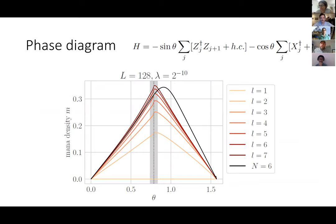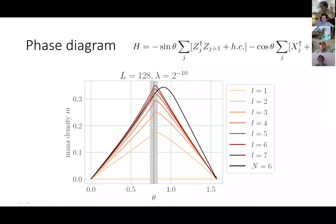We take that chain, do a matrix product state calculation to get the ground state as an MPS for a 128-site chain, for different values of theta. We look at sub-regions of size L — L equals one, two, three, up to seven — calculate the mana, and divide by the sub-region size to get the mana density as a function of theta. The first thing we find is that the mana is extensive: it obeys a volume law. The coefficient of that extensive term vanishes when either term separately dominates, because those limits are stabilizer states. The mana then increases essentially monotonically on both sides up to a maximum value at or very close to the quantum critical point.